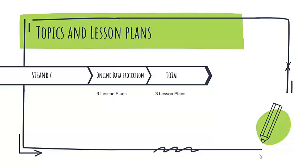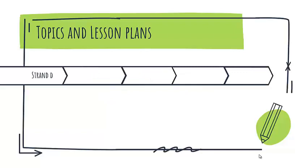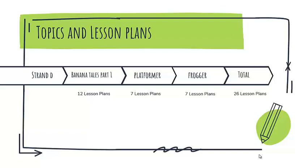In coding strand we have to cover three topics that are banana tales part 1 and two game creation courses platformer and frogger. In banana tales part 1 there are 12 lesson plans and there are seven lesson plans in both platformer and frogger. Altogether there are 26 lesson plans in strand D.